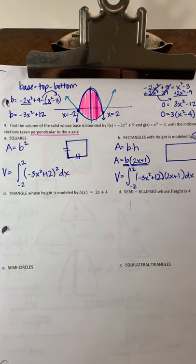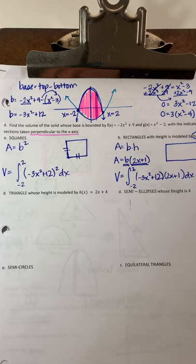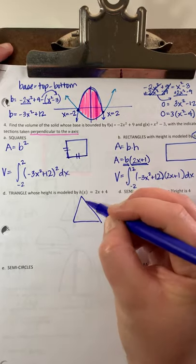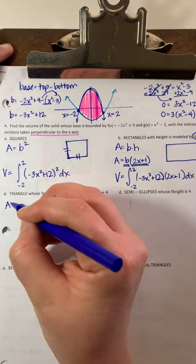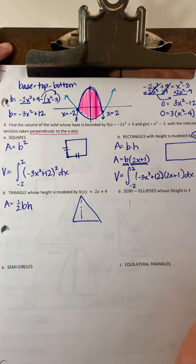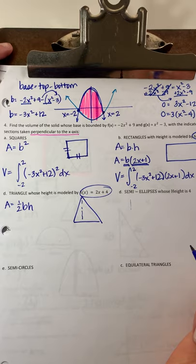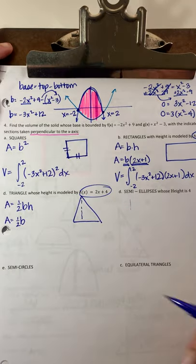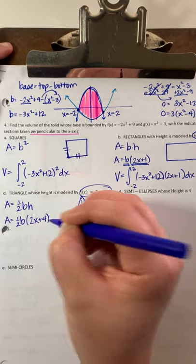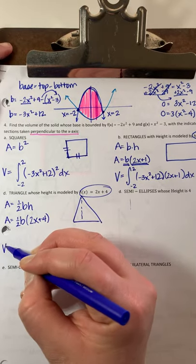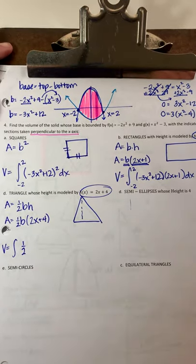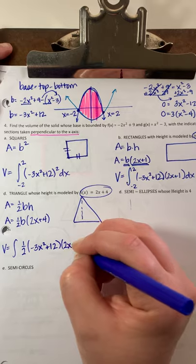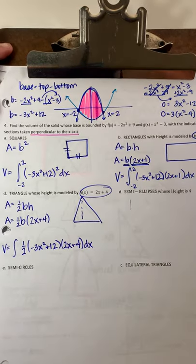Next is a triangle — not specified as a right triangle. Area of a triangle is one-half base times height, and the height is given as 2x plus 4. So area equals one-half times the distance across the base times 2x plus 4. Volume is then the integral from negative 2 to 2 of one-half times negative 3x squared plus 12 times 2x plus 4, dx.